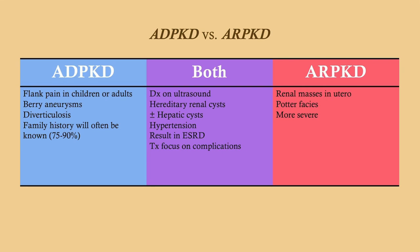If you diagnose a patient and they have four cysts now, 20 years down the road they may have 15 cysts — particularly with autosomal dominant PKD. Hypertension is a common feature in both, and often develops over time as you begin to lose renal function. They will both ultimately result in end-stage renal disease, and treatment for both is focused on the complications.